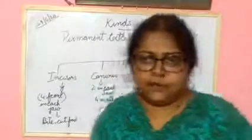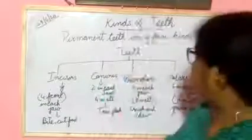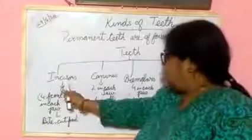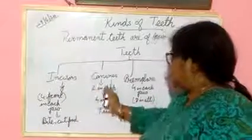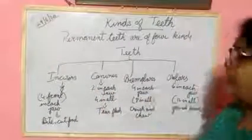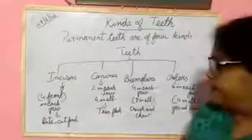Permanent teeth are four kinds. What are they? Incisor, canine, premolar and molar.